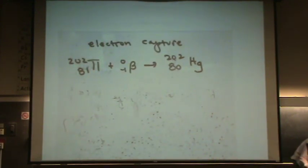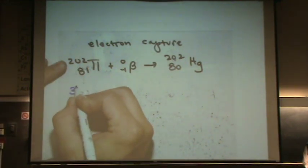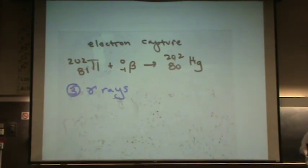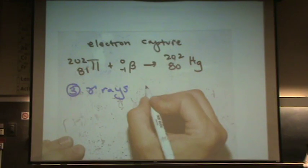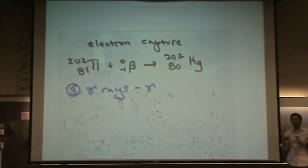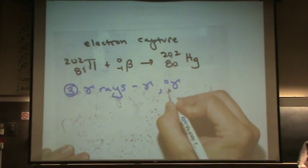Finally, the third type of radiation. It's called gamma rays. And this is symbolized by gamma. Notice I didn't call this a gamma particle. This is not particulate. This is massless and uncharged. It's just a ray. It can also be written like this. Zero zeros.